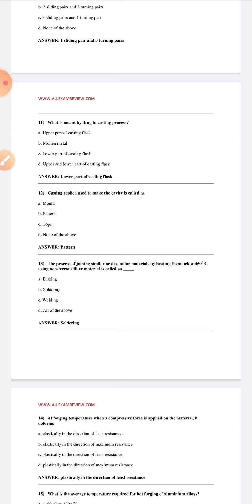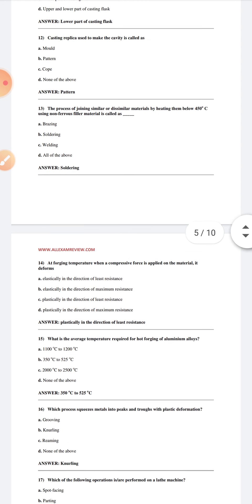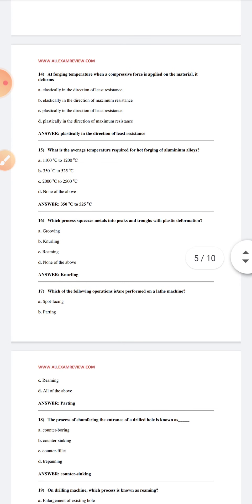The process of joining similar or dissimilar materials by heating them below 450 degrees Celsius using non-ferrous filler material is called soldering. At forging temperature, when the compressive force is applied on the material, it deforms plastically in the direction of least resistance. What is the average temperature required for hot forging of aluminum alloy? 350 degrees Celsius to 525 degrees Celsius.